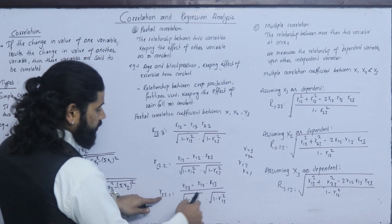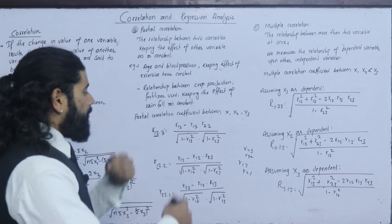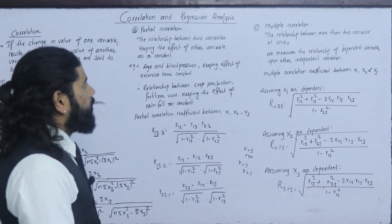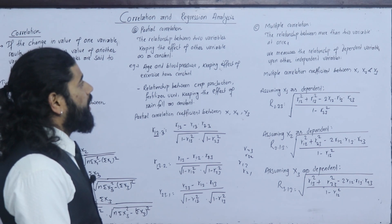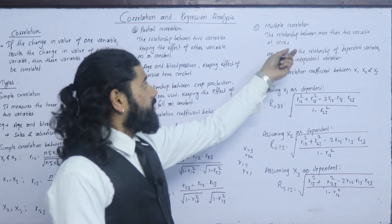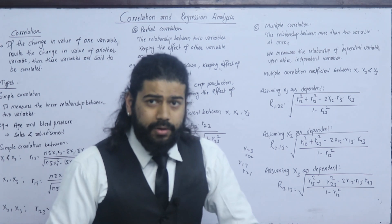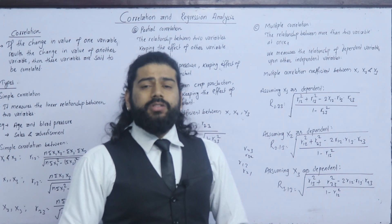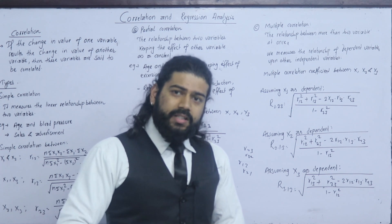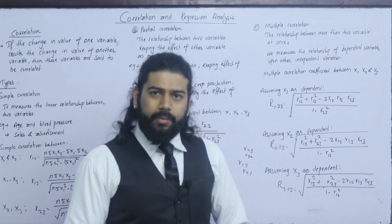This is the partial correlation formula. Now, the coefficient of partial determination is R squared. The coefficient of multiple determination is also R squared. Multiple correlation examines the relationship between more than two variables at once — one dependent variable and multiple independent variables.